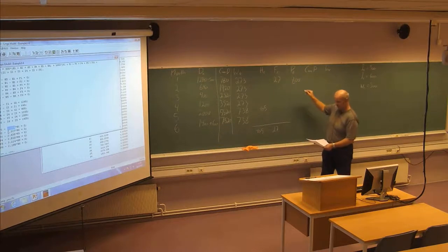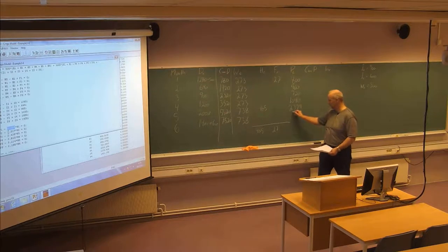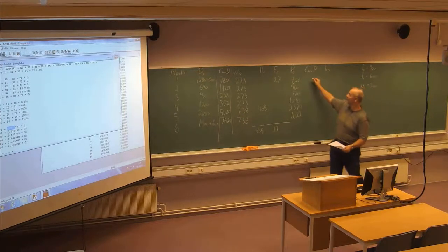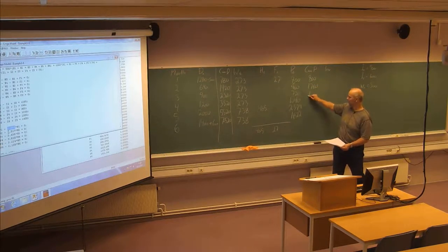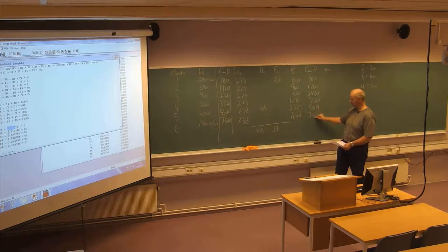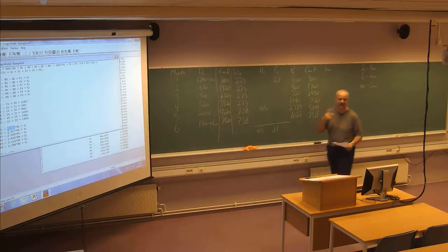In January we will have 800, in February 960, then 720, 1040, 2379, and 1622. We can also make a column of the cumulative production — the production up to that month — and compare with the cumulative demand. We can also see what is the excess production, how much we have left on inventory.